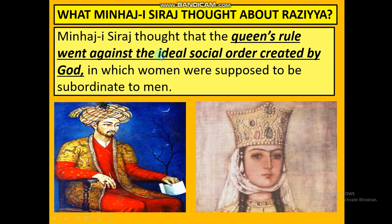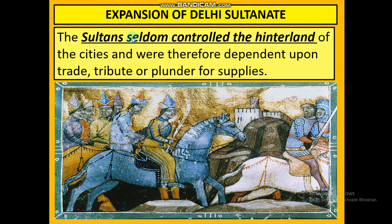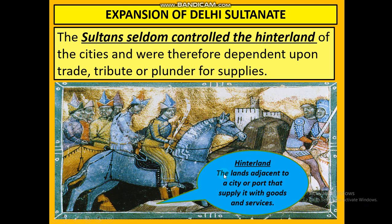Minhaj-i-Siraj thought that the queen's rule went against the ideal social order created by God, in which women were supposed to be subordinate to men. Even though he was a learned and educated man, he discriminated against women, saying a queen cannot rule a country because God has ordained only males to rule. The sultans seldom controlled the hinterlands of the cities.